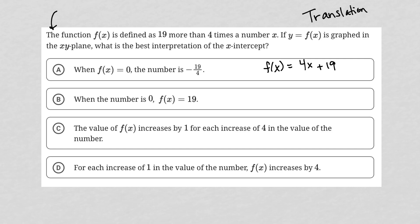So the x-intercept is where f of x equals 0. So we could say that means 0 equals 4x plus 19. And we could subtract 19 from both sides. And we'd have negative 19 equals 4x. And we divide by 4. And we know that our x-intercept is equal to negative 19 over 4.